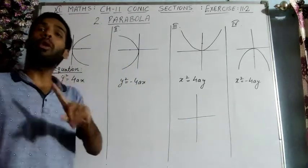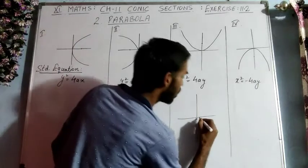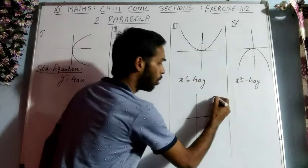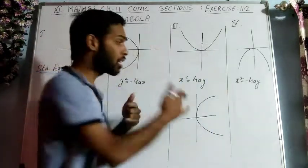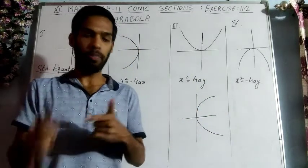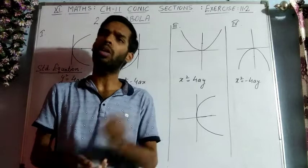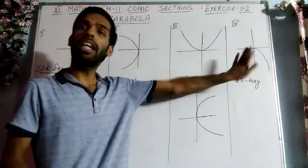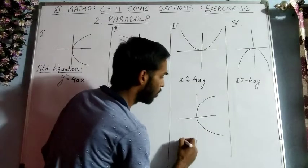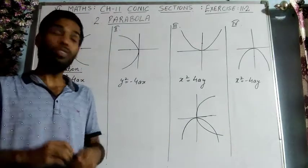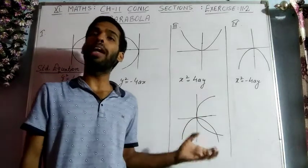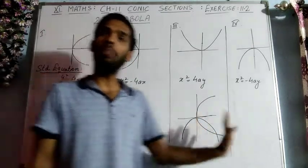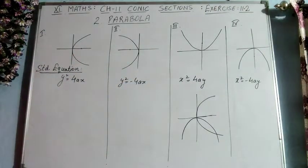The first parabola is about the positive x-axis. The second is about the negative x-axis. All these parabolas have their vertex at the origin. The parabola is symmetrical about positive x-axis, symmetrical about negative x-axis, symmetrical about positive y-axis, and symmetrical about negative y-axis respectively.